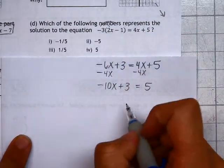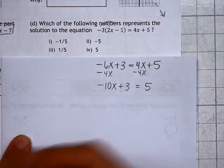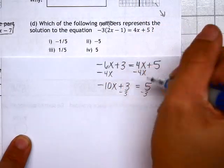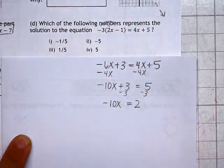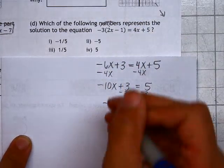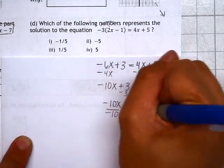The next thing we'll do is move the 3 over to the right side by subtraction, so that now gives us negative 10x equals 2. And since the last step is to get x by itself, we'll need to divide by negative 10.